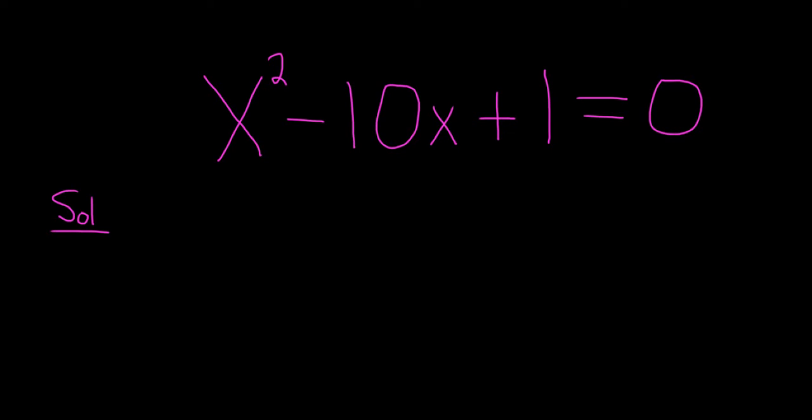So how do you do this? Basically, you need two numbers that add to the opposite of whatever is here. So the opposite of negative 10 is 10. So we need two numbers that add to 10, and that multiply to the number over here. So multiply to 1.